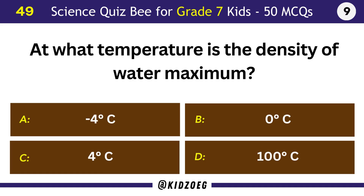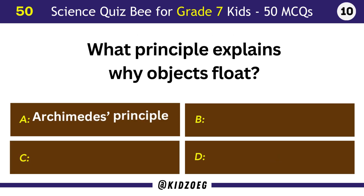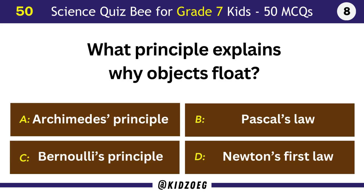At what temperature is the density of water maximum? 4 degrees Celsius. What principle explains why objects float? Archimedes' principle.